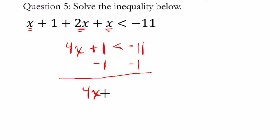Because now 1 minus 1 is 0 and 4x, well x is almost by itself. Here if we divide by 4 on both sides, this negative 12 is from negative 11 minus 1, we get x is less than negative 3.